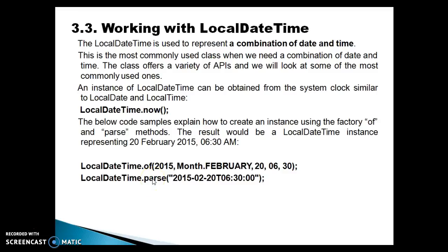Similarly, we can make use of the parse() method. You will have to pass the date in the form of yyyy-MM-dd, followed by a capital T, and after that you can specify the time. So your date and time are separated by the alphabet T. This is how you can use parse() to create a LocalDateTime object.